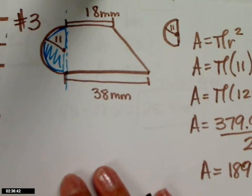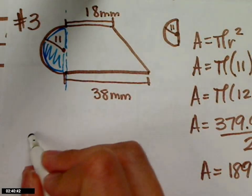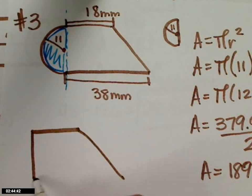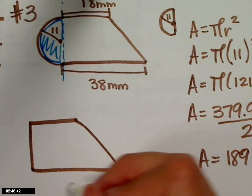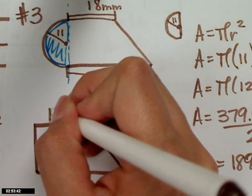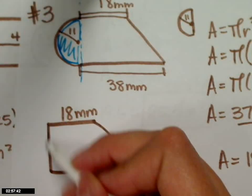I've drawn my trapezoid. I'm going to go ahead and label everything I've got. 38 millimeters for one of the bases, 18 millimeters for the other base. And how do I figure out this height?